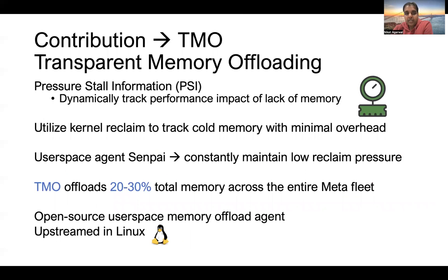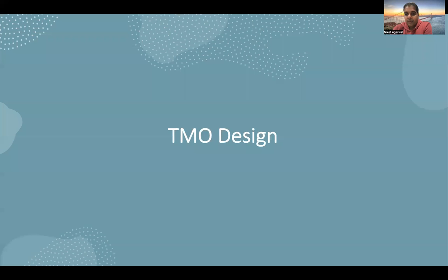So with that background, what we did was we built a transparent memory offloading solution that we've deployed in Meta's data centers. Today, we offload anywhere from 20 to 30 percent of total memory across our fleet, and all the techniques we've deployed are open sourced. Next, my colleague Dan is going to go into the details of the TMO design.